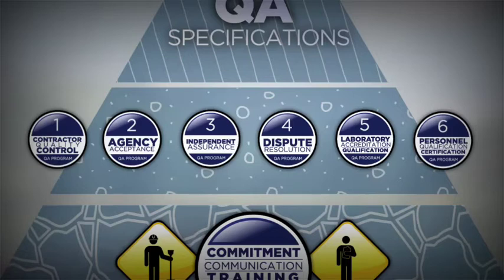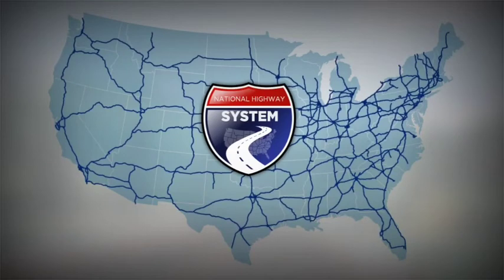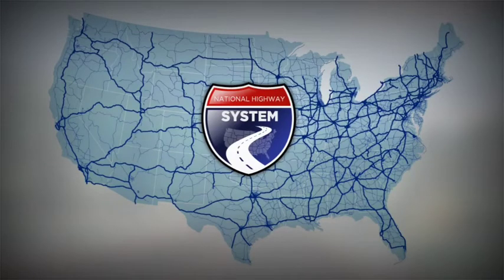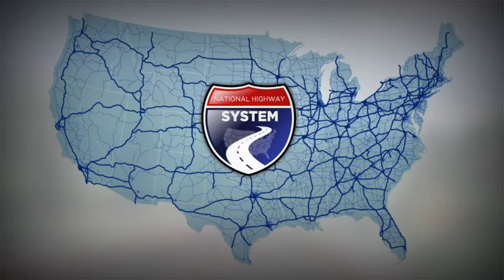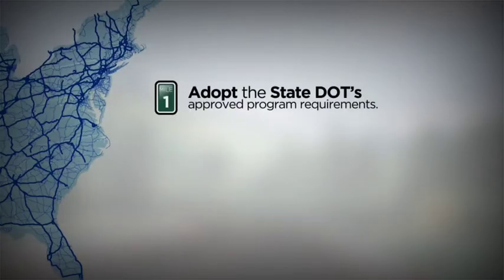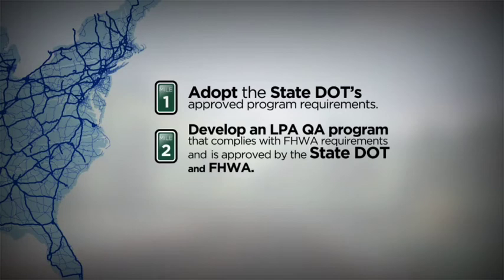Let's go over the QA program requirement based on road designation for federal aid projects. For projects on the National Highway System, or NHS, the LPA must have an FHWA-approved QA program that addresses the six core elements. The NHS includes the interstate highway system and other major roads designated by each state. In this case, an LPA may either adopt the state DOT's approved program requirements or develop an LPA QA program that complies with FHWA requirements and is approved by the state DOT and FHWA.